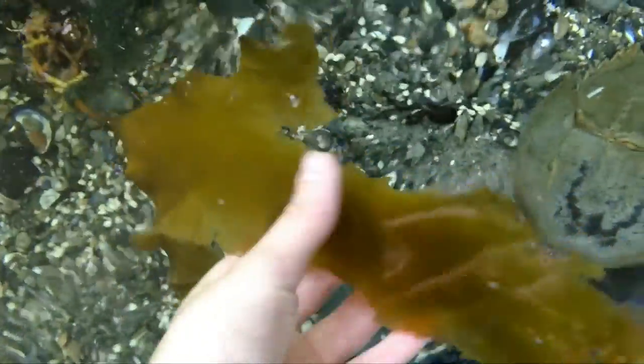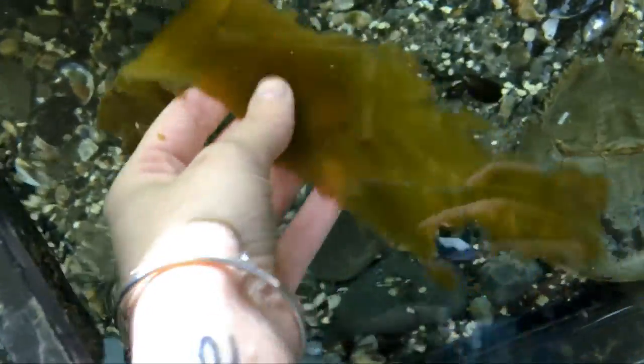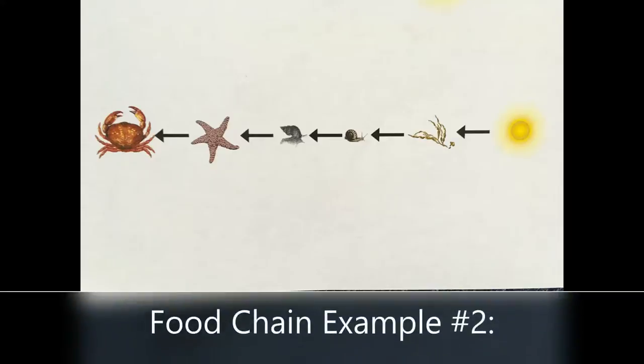There's our seaweed, and again seaweed gets its energy from the sun. Crabs link the first food chain with the second example I just gave you. Crabs get their energy from sea stars, which get their energy from dog whelks, which get their energy from periwinkles, and our periwinkles get their food from seaweed.